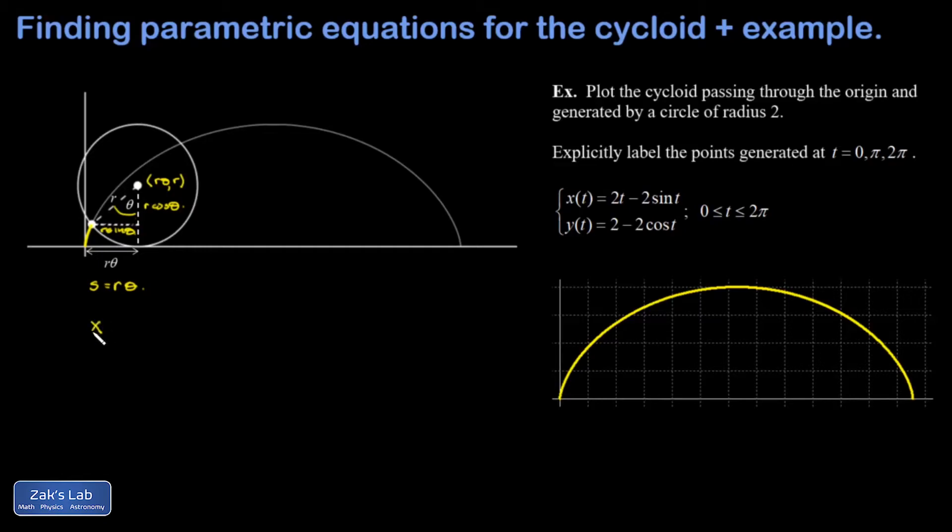This allows me to write down the parametric equations. I can say that x(θ), the x coordinate at the moment shown in the picture, is given by r theta—that's the x coordinate of the center of the circle—minus r sine theta. The y coordinate is given by the height of the center of the circle, that's r, minus r cosine theta.